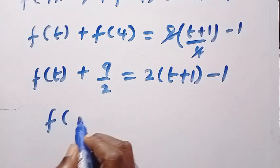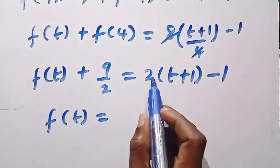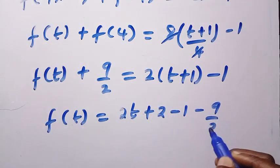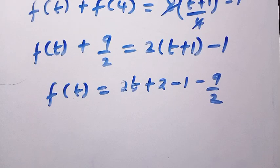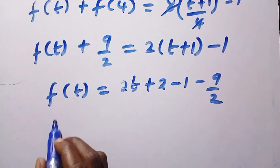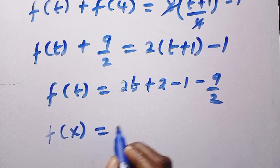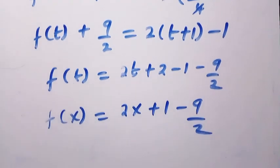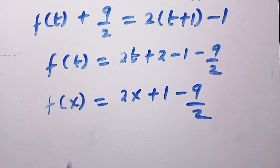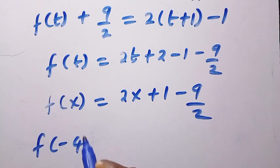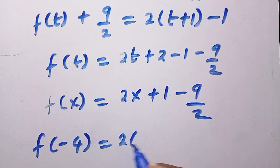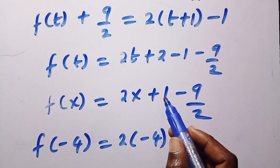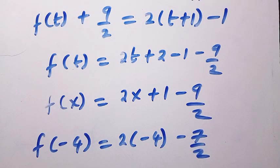Then we have f of t equals 2t plus 2 minus 1 minus 9 over 2, which simplifies. And if we change the variable from t back to x, we get f of x equals 2x plus 1 minus 9 over 2. Replacing x with minus 4, we have f of minus 4 equals 2 times minus 4 plus 1 minus 9 over 2, which gives minus 8 plus 1 minus 9 over 2, that is minus 7 minus 9 over 2.